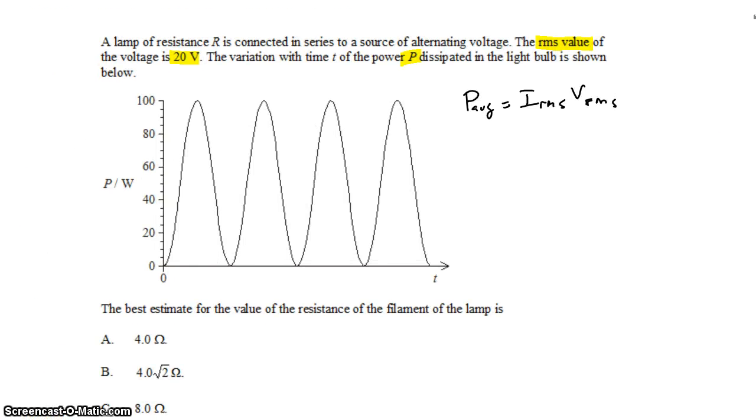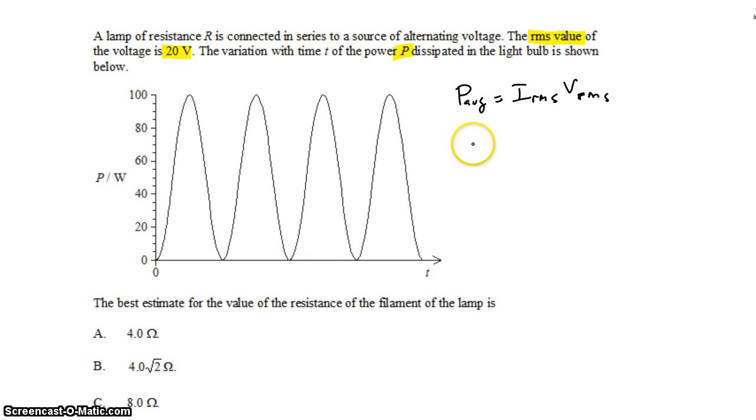So that's one thing that's going to help us. The other thing that's going to help us is that at all times, Ohm's law is obeyed, where V equals IR. So anytime you have a voltage, you'll have a particular current that matches the resistance.